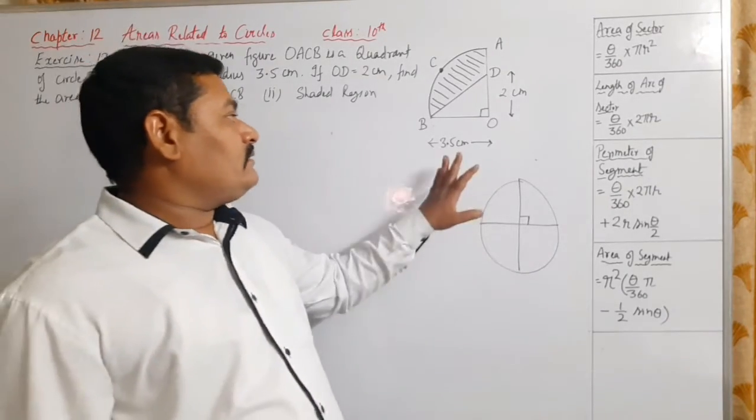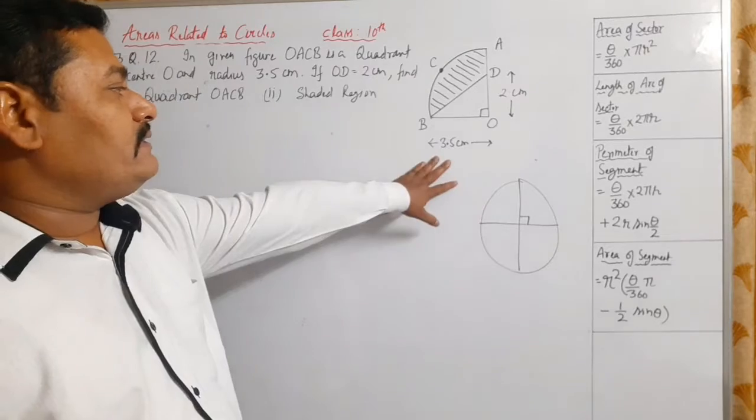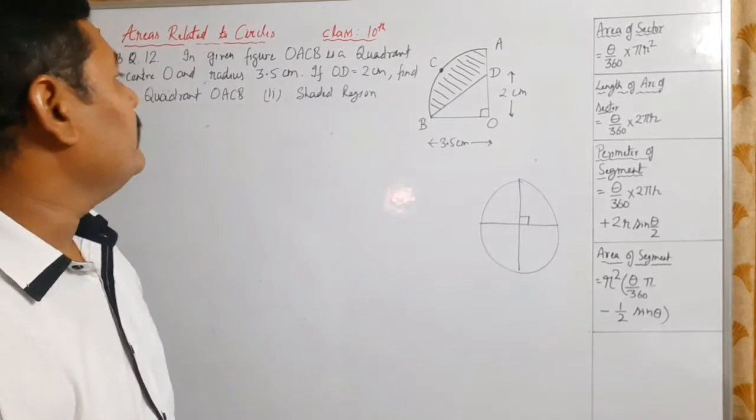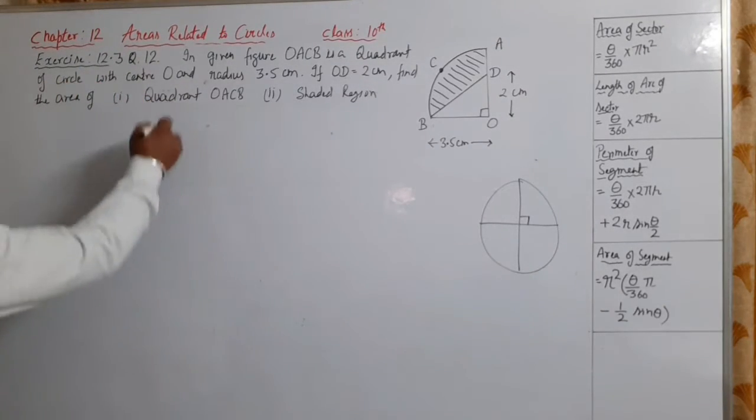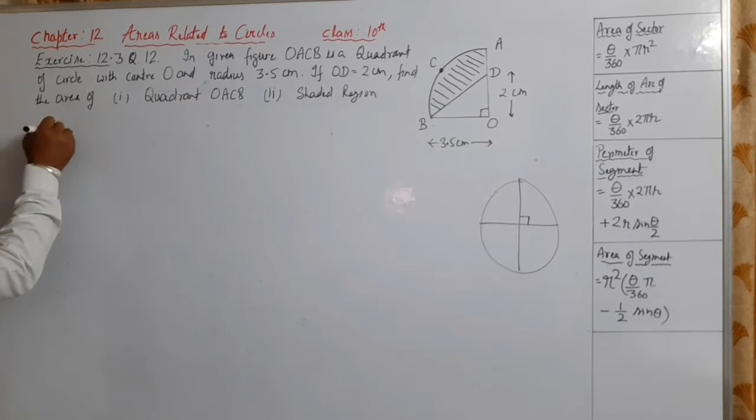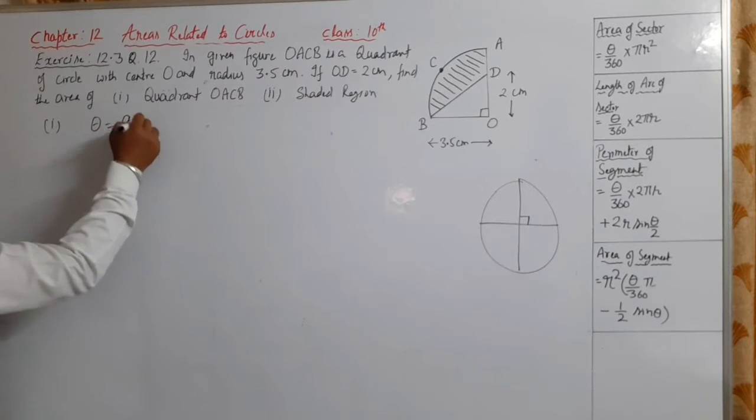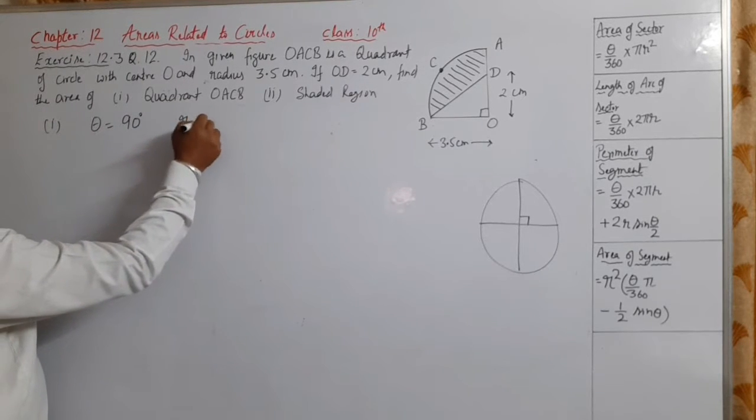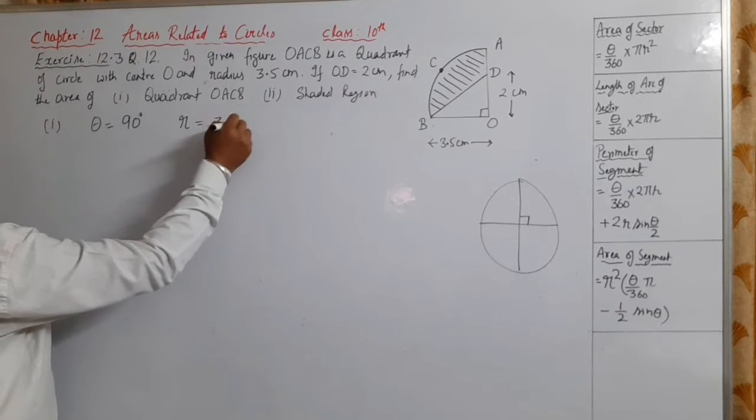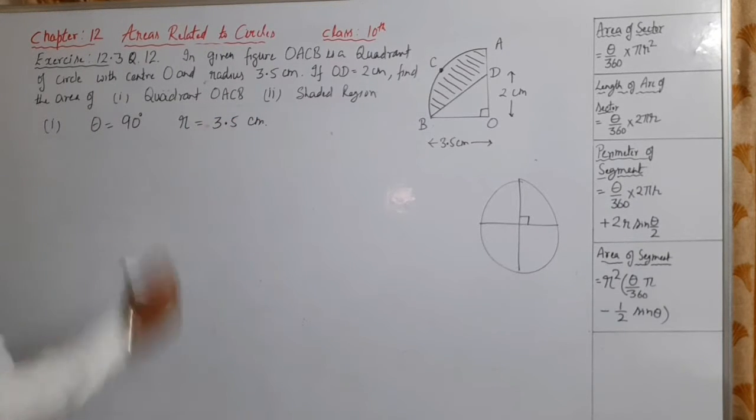So, if the radius of this quadrant is 3.5 centimeters, the first question is: find the area of quadrant. Here, theta is equal to 90 degrees and radius is equal to 3.5 centimeters.